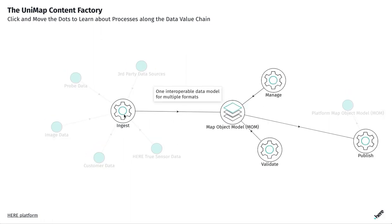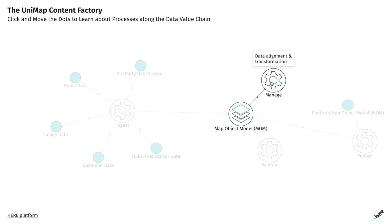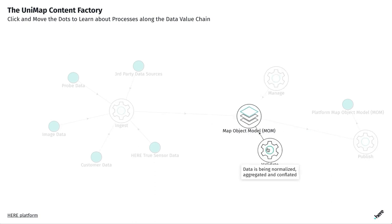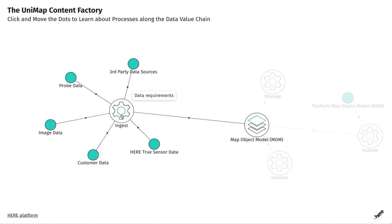Taken together, these elements are what we call the data value chain of the Unimap content factory. They increase the value of the data at each step. Let's look at how this data model contributes to Unimap.